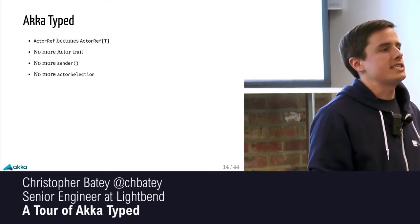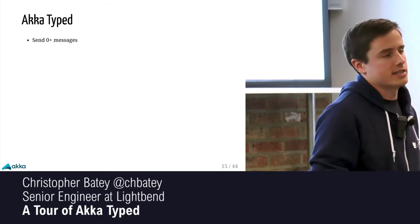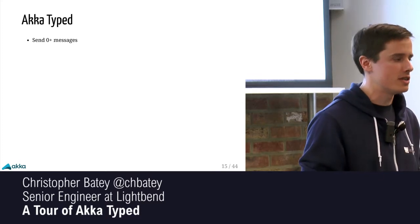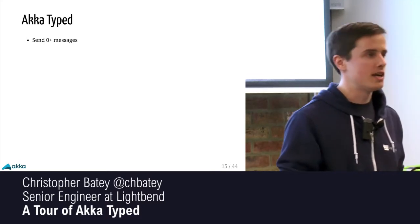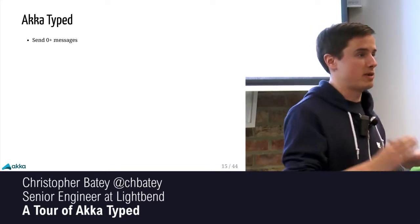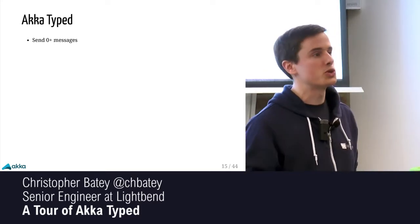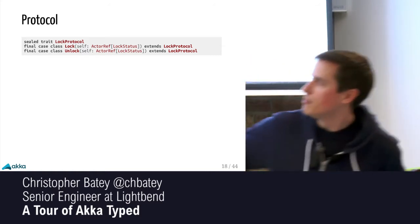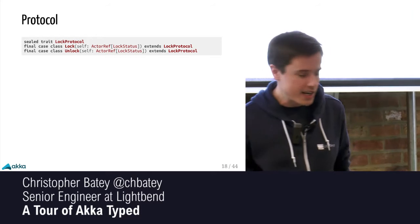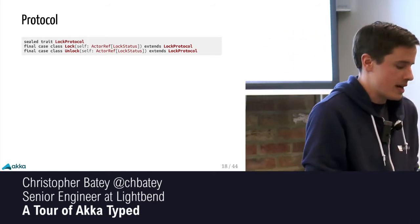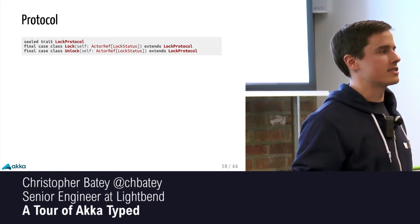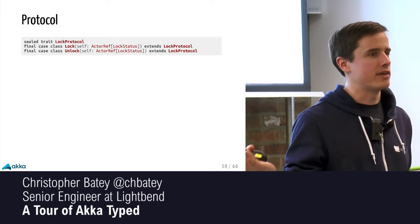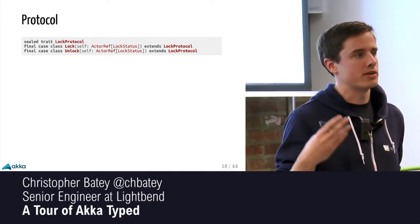In Akka Typed you define your various behaviors, define which messages a given behavior is allowed to receive, which messages you're allowed to send, and then you return the next behavior. We're doing this with become in two out of three cases. When we're locked and someone sends another lock message, we send back saying the lock is taken — but we're not actually becoming a new state. We can't do that in Akka Typed; you have to explicitly say what your next behavior is.